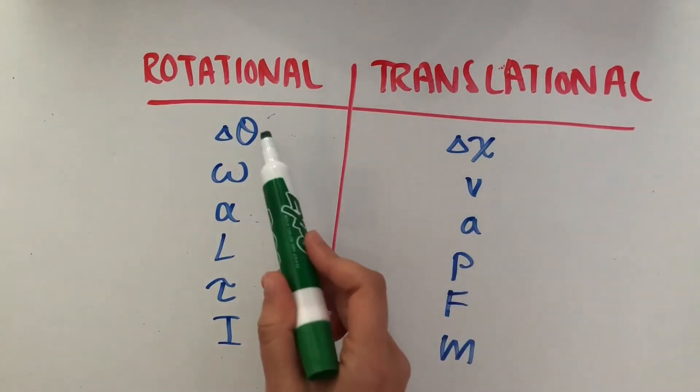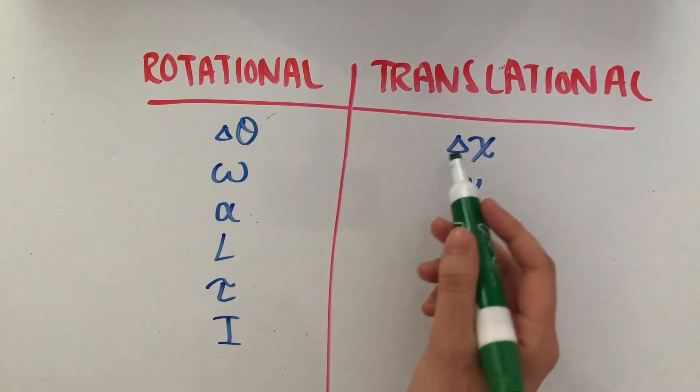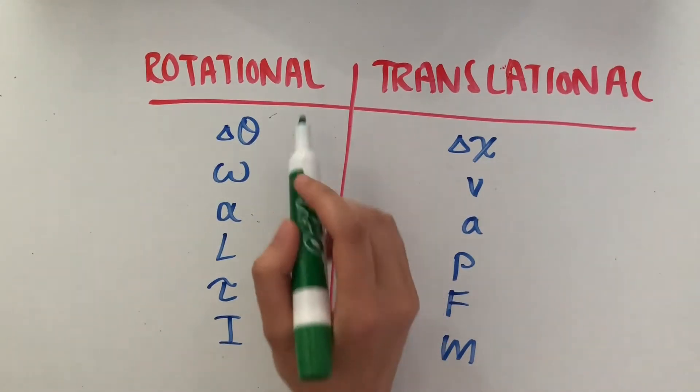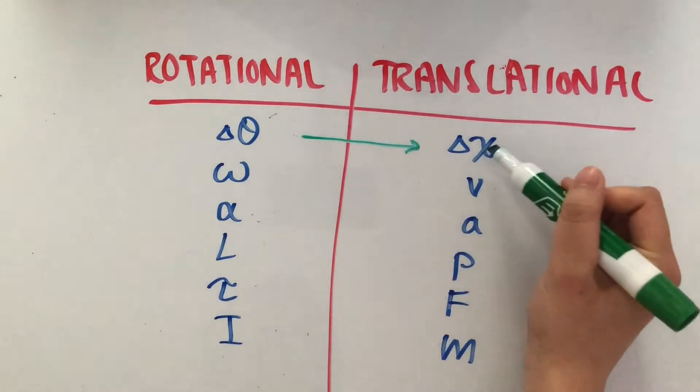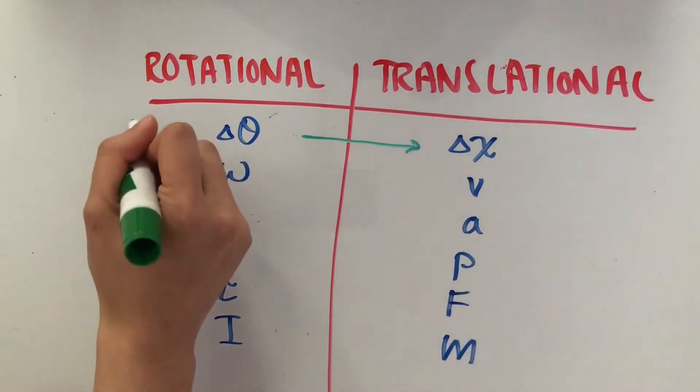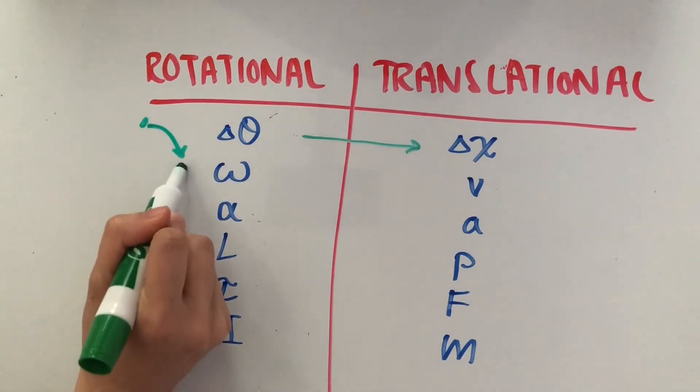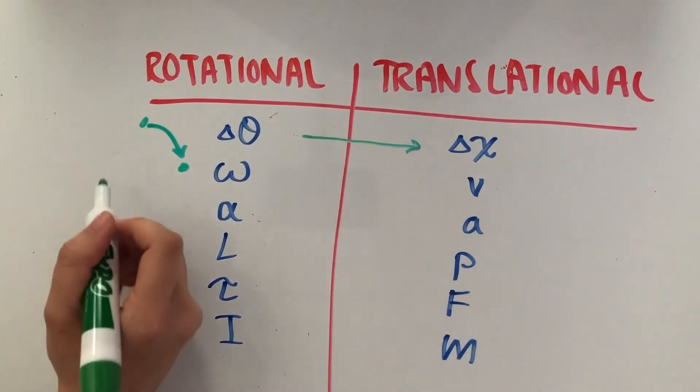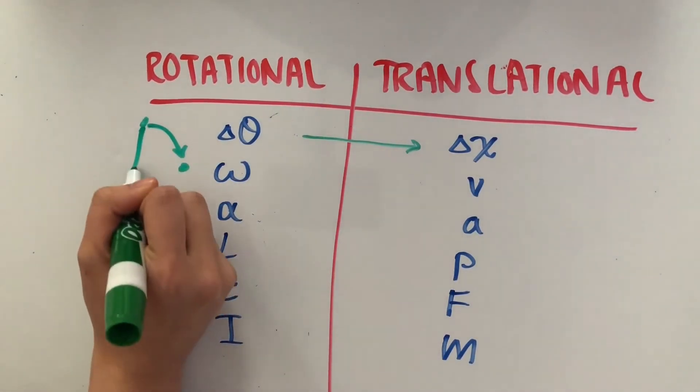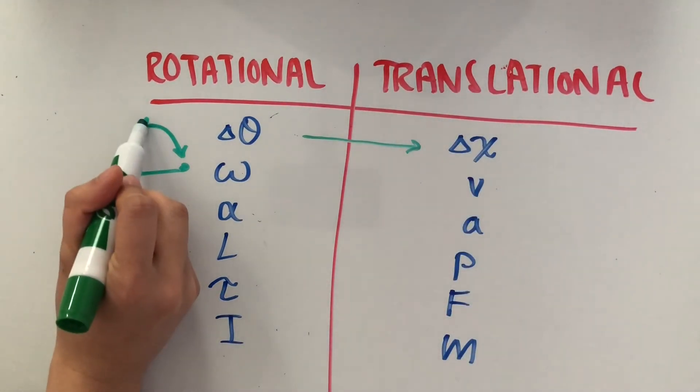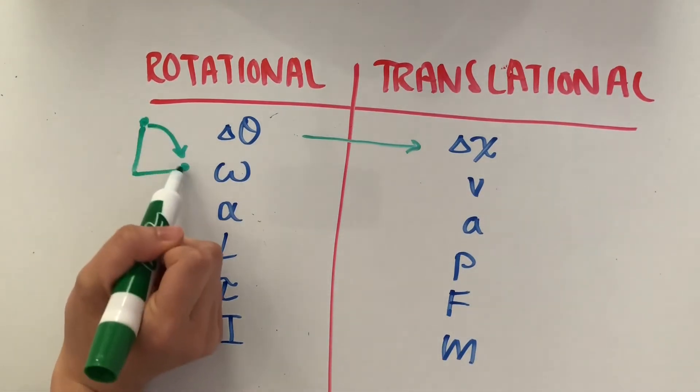We're going to see that by comparing each of these to their translational counterparts. Angular displacement, which is Δθ, is similar to translational displacement Δx. The main difference is when we have a point rotating to a different position, our angular displacement is the angle between these two points, whereas the translational displacement is the arc length - the actual distance that this point travels.